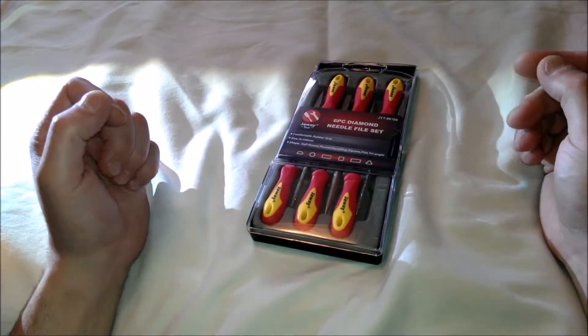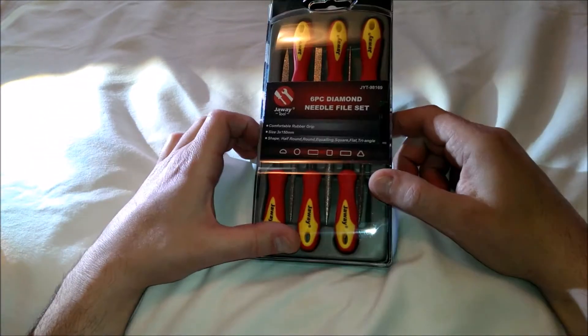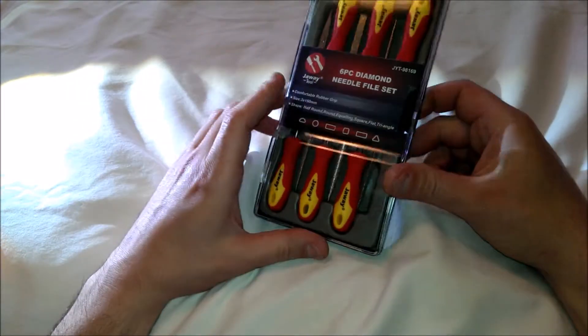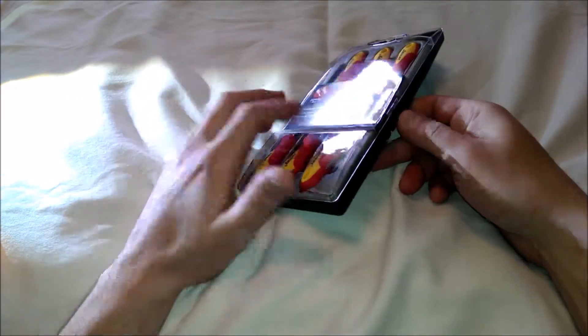This is a six-piece set. These are diamond-impregnated bits. We have half-round, round, equaling, square, flat, and triangle styles.